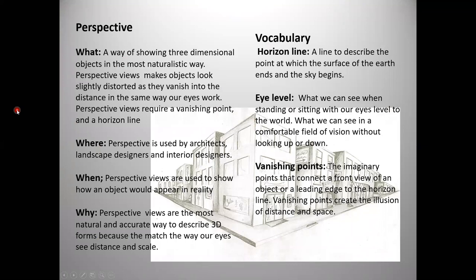So what is perspective? What's the definition? Well, perspective is a way of showing three dimensional objects in the most naturalistic way, which is what we saw. They look like three dimensional, like we talked about the figures, that Captain America figure where the hand looks further forward than the head. Perspective views make objects look slightly distorted as they vanish into the distance in the same way our eyes work. Perspective views require a vanishing point and a horizon line. Now, these points are very important because this is some of the vocabulary we will be using. So it's important you understand what they mean. So let's jump over to the vocabulary section.